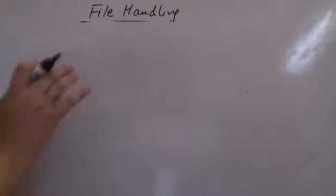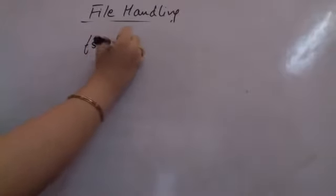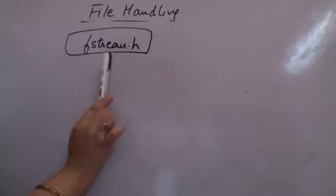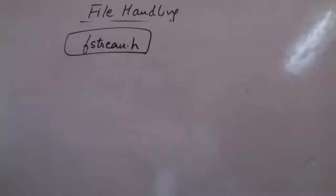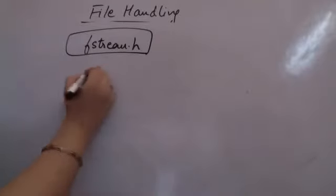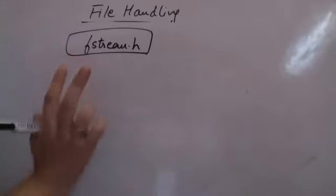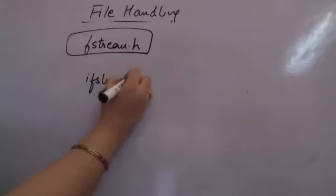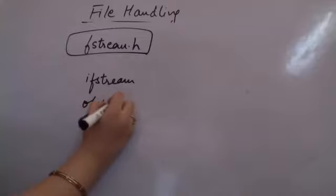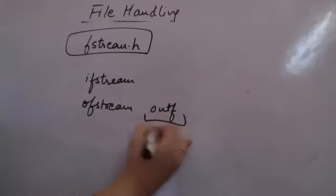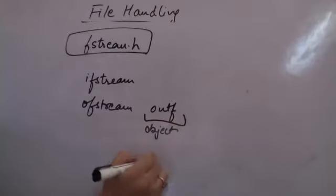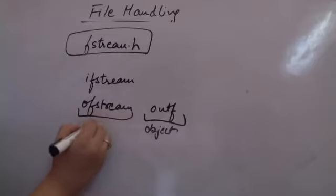All the file handling classes are in fstream.h. For a file handling program, you need to include this header file: #include fstream. After including this file, there are various functions to open the file. Since it's a class object — suppose you are opening a file for writing — you create an object like: ofstream outf, where ofstream is the class.